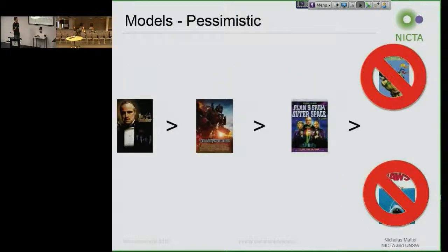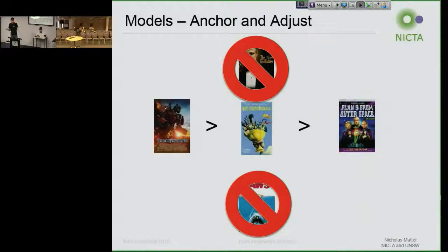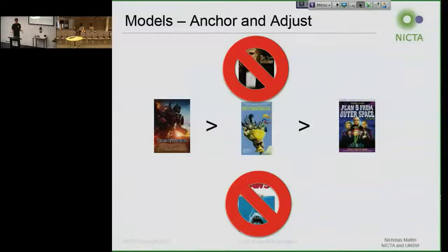Another model is the one I illustrated with Quay — we take any unseen item and just push it to the bottom. We say it's unseen because in this domain, this might actually be valid: you don't watch movies you think you're probably not going to like. A third model is this adjustment anchor idea, where we assign the user's median ranking to an unseen item. If Hannah's watched 100 movies and her median is a three, any unseen movie we just assume Hannah gives a three until she tells us otherwise.